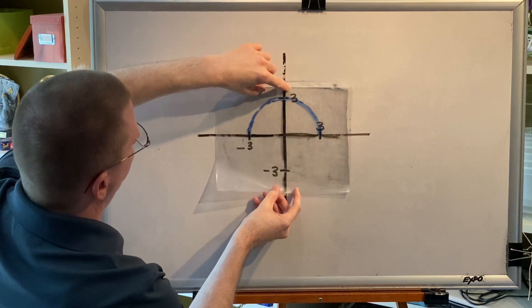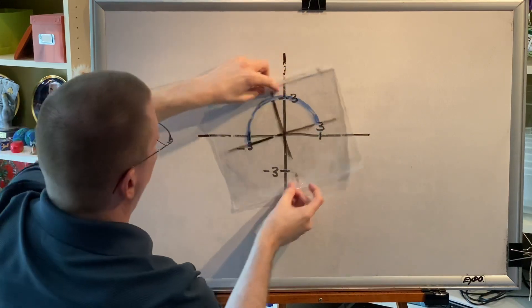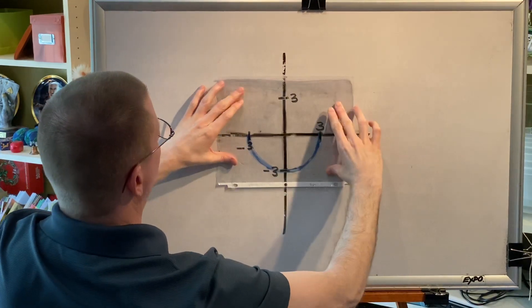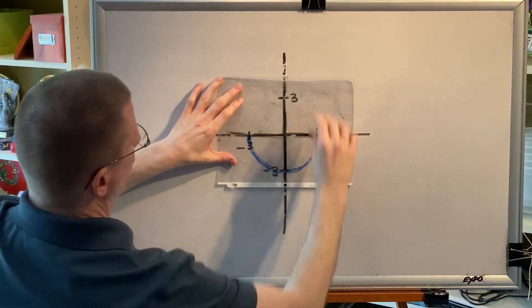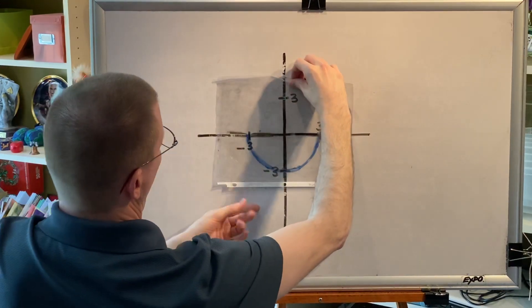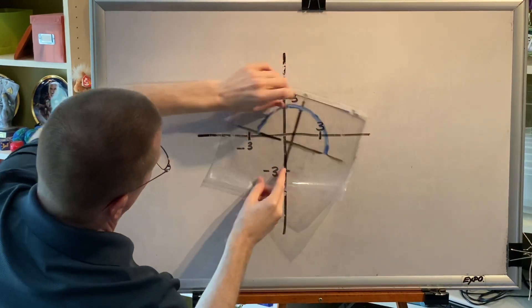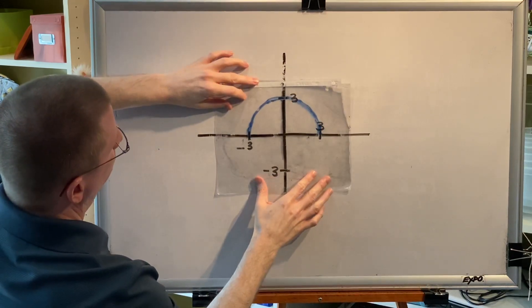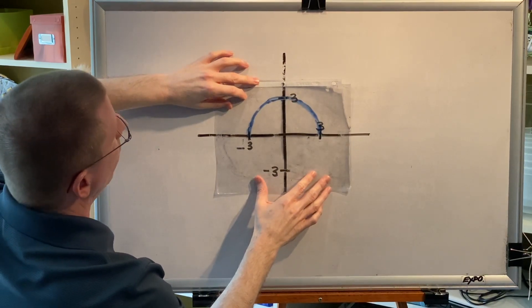Let's test for origin symmetry. Before, after — the pictures are different. There is no origin symmetry for this half-circle.